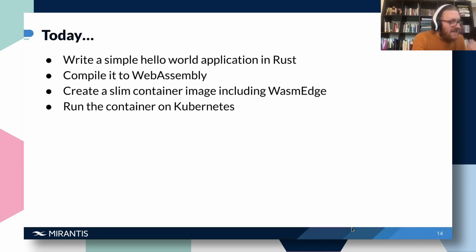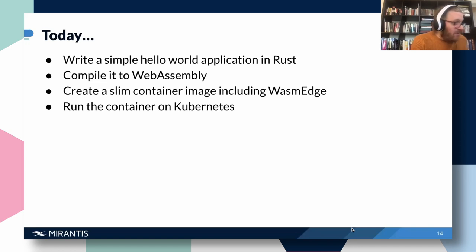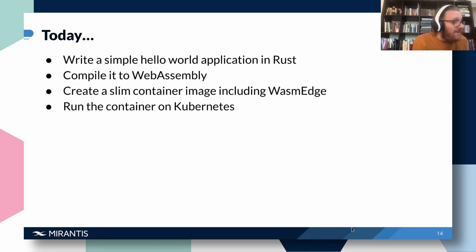For the sake of ease and follow-along universality, we're going to do things the easy way today — using WasmEdge inside of a slim container. We'll see how to write a simple Hello World application in Rust, compile it to WebAssembly, create a slim container image including WasmEdge, and run that container on Kubernetes. If you're interested in the harder way or more complicated WebAssembly apps in the future, let us know in the Q&A or any other means — that's a topic we could explore in more depth.